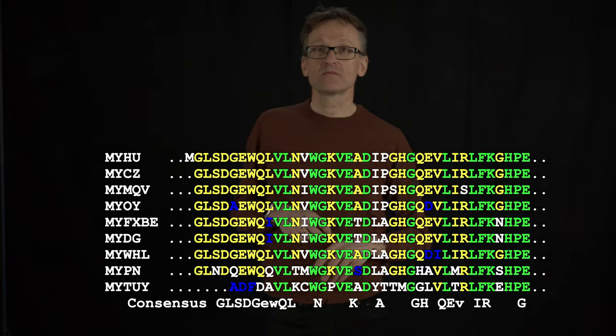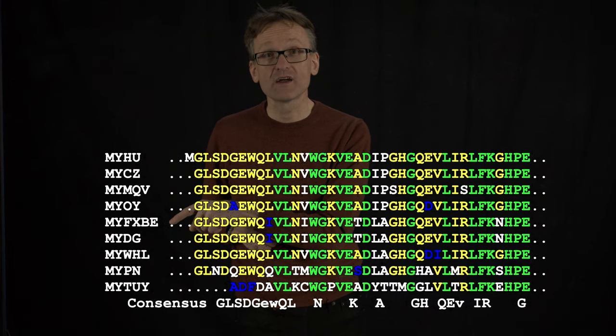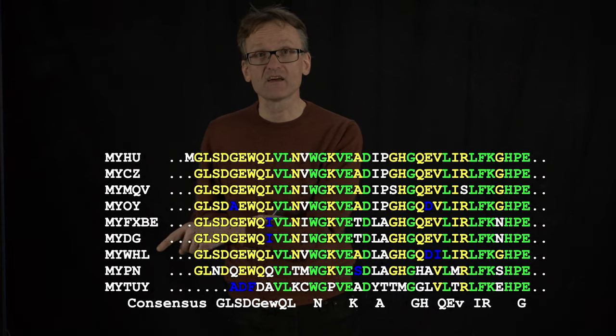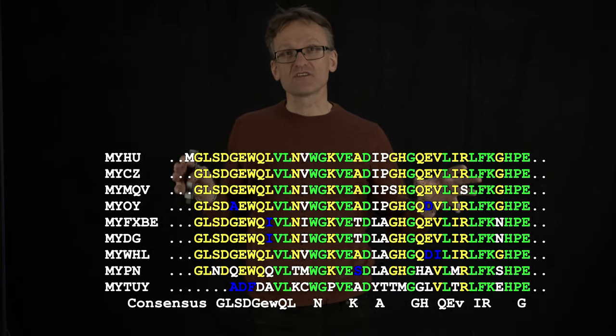Let's look at some real structures. I think this is myoglobin. Q is for human and then we have some sperm whale, DG is dog, W is whale, that's sperm whale, PN is pony, etc. Do you see the patterns here?